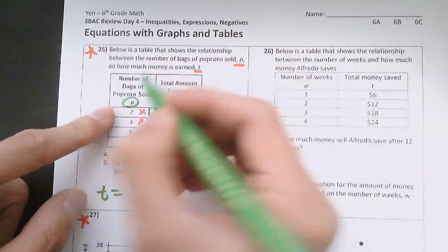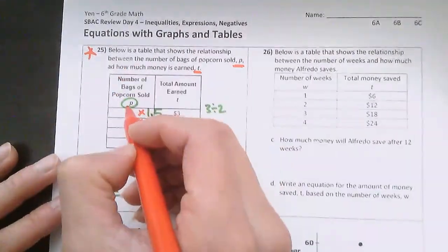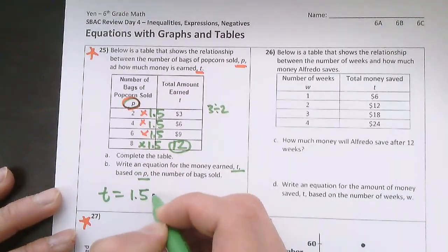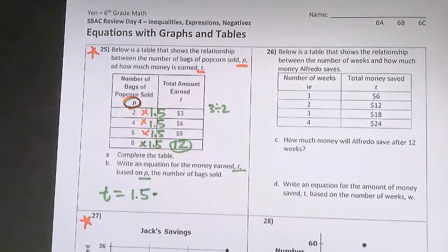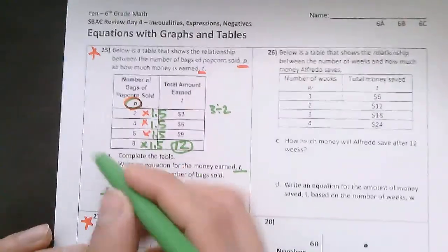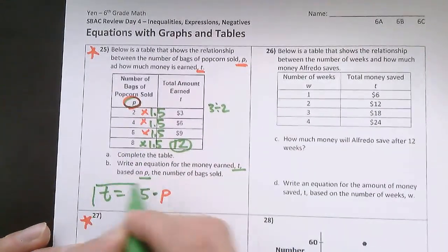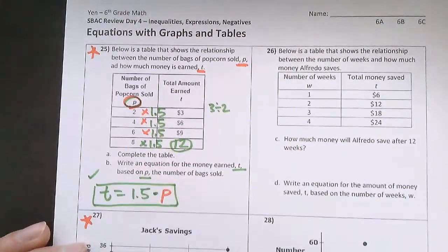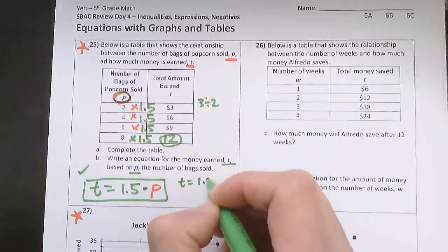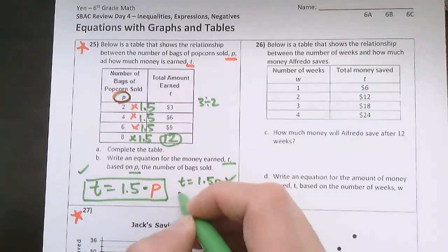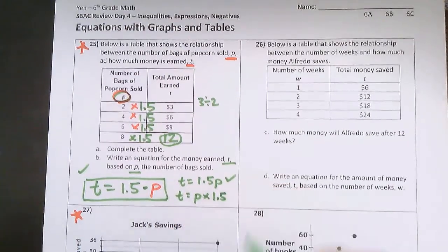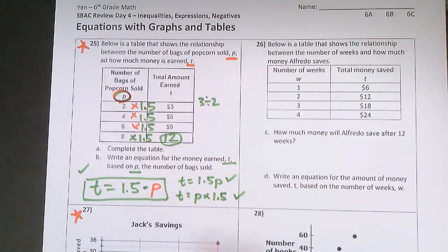And whatever is here is the variable P. P is the number of bags. So it's 1.5 times however many bags I sold, which was P. T is equal to 1.5 times P, which is the number of bags you sell. That's your answer. Other possible ways you could have written this: you could have written T equals 1.5P, that's correct. Or T equals P times 1.5, that's correct too. Any of those ways works.